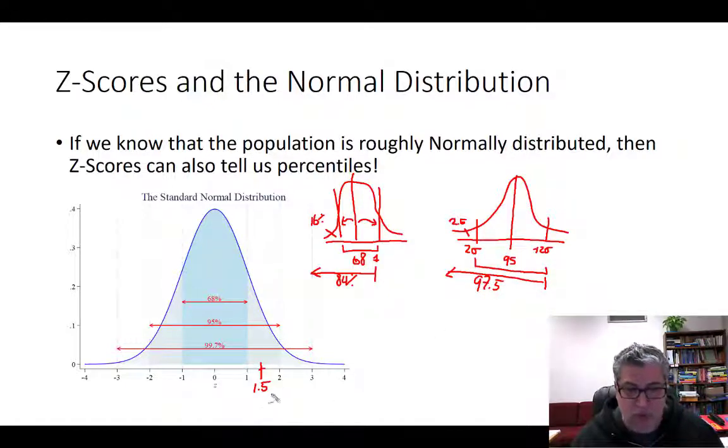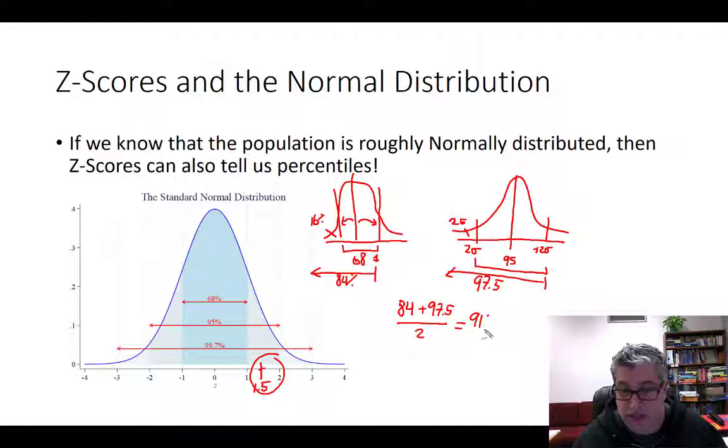Now, your score was 1.5. So, it's going to be, the percentile is going to be somewhere between these two percentiles. So, let's just average them, and we get, let's see, 84 plus 97.5, divide by 2, and we get approximately 91%. That's a pretty good percentile score, I'd say.